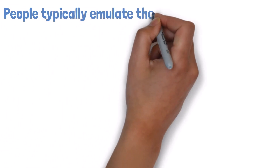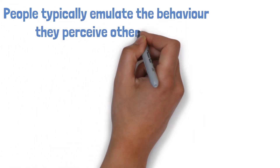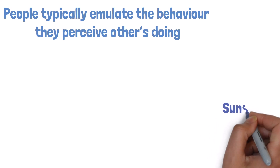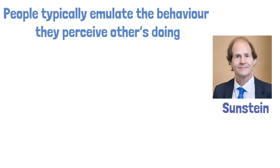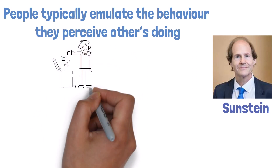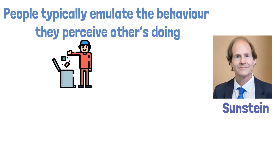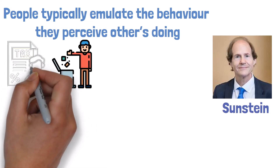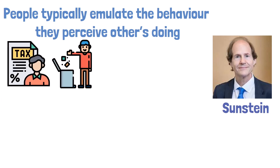People typically emulate the behavior they perceive others doing. Sunstein in 2000 found that people are equally likely to litter or not litter based on the behavior of others around them. Likewise, another example of contagious behavior is telling individuals that there is a high level of voluntary tax compliance, which then leads to individuals also complying and completing their taxes.